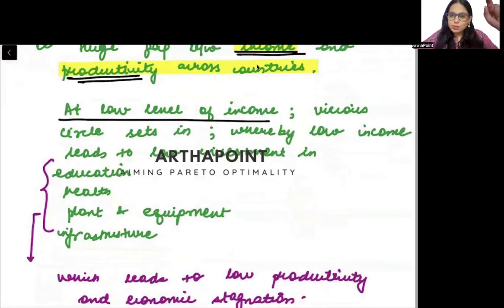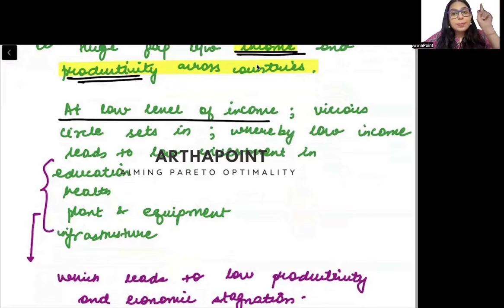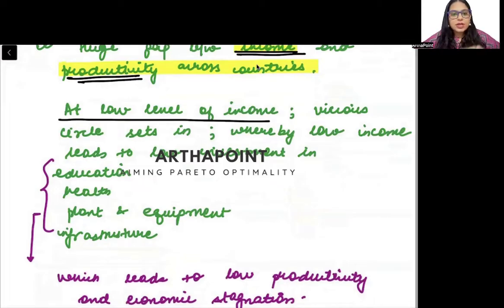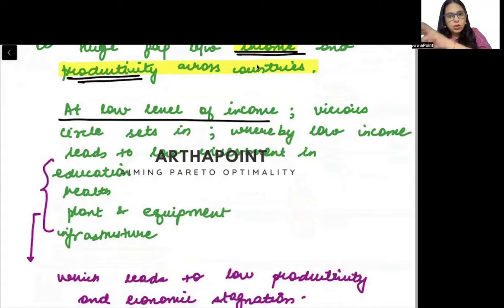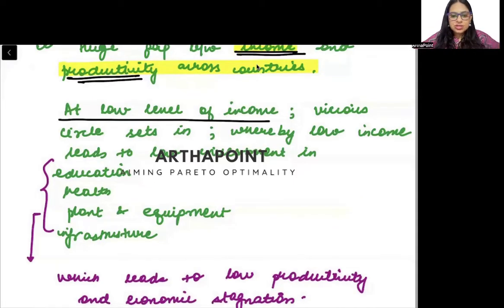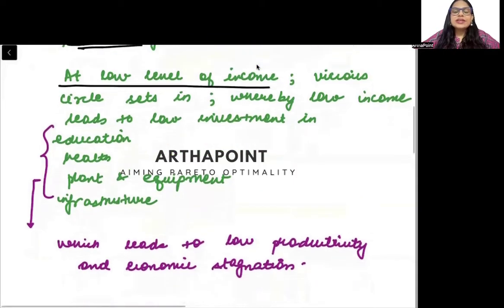People will invest less in education and health. When people are not educated and do not have good health, they will not be productive. When people are not productive, they will have less income. So: low income, low capabilities, low health, low education, and back to low income. You fall into a vicious circle.